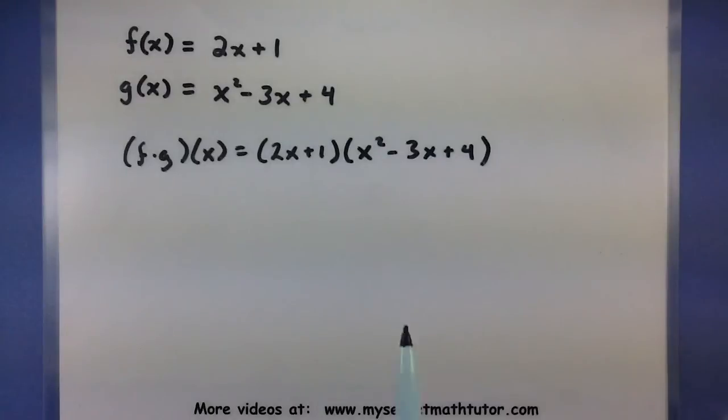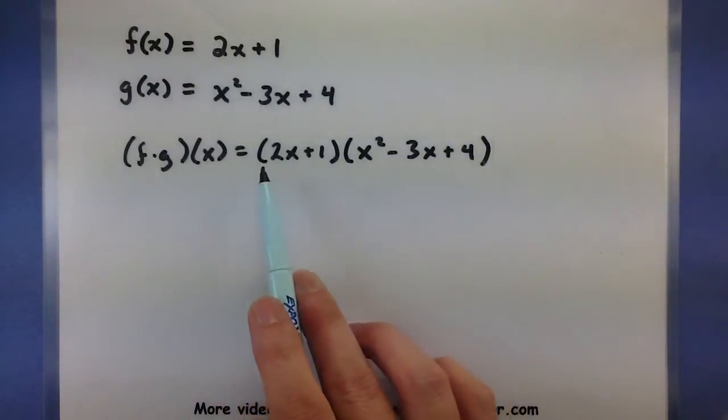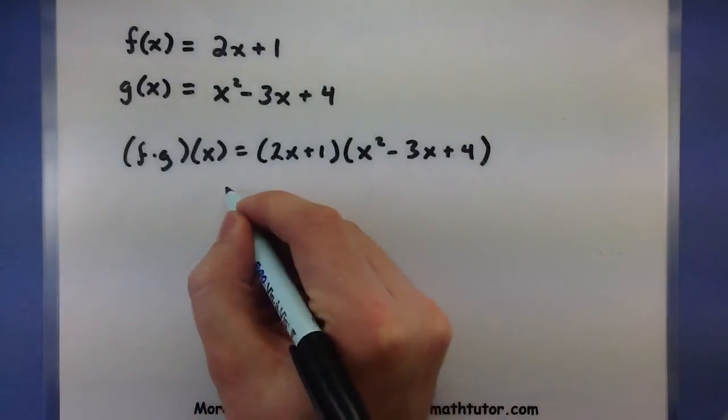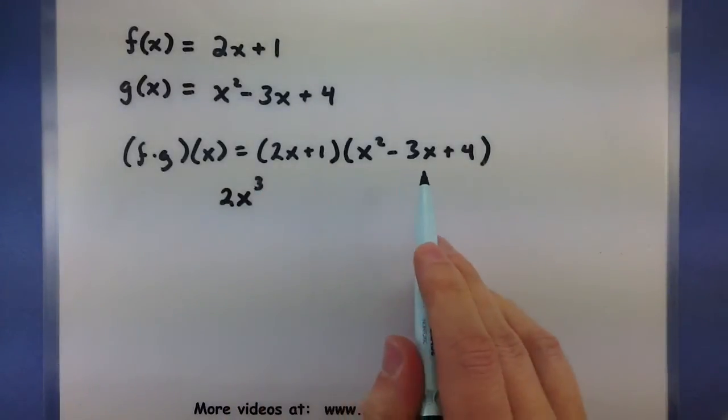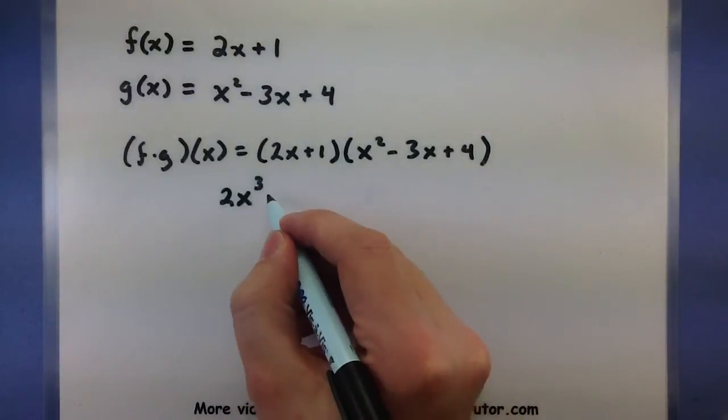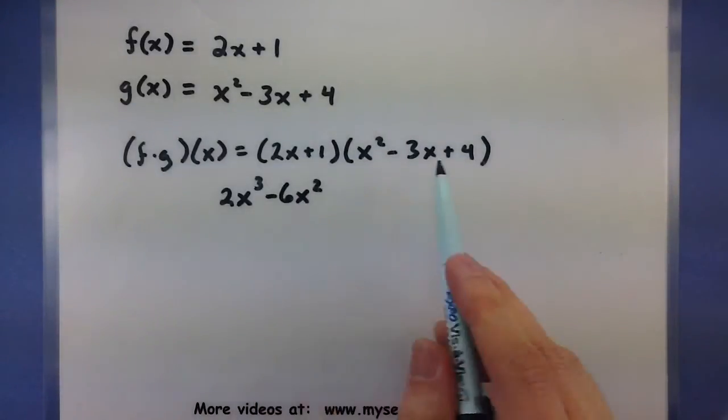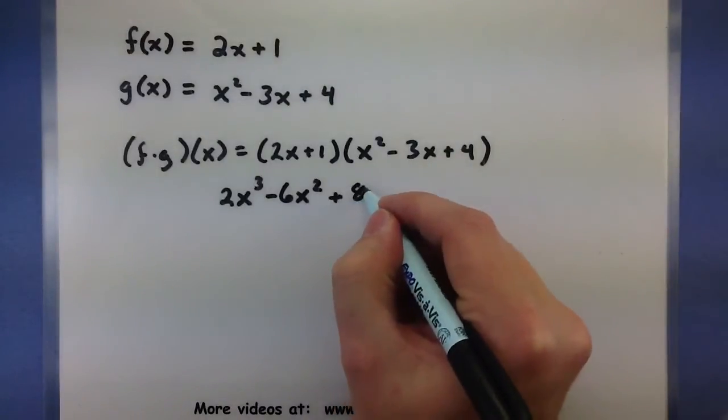There we are. So I must make sure that both of these terms get multiplied by all the terms in here. Let's start with the 2x and run it through the second one. So 2x times an x squared, 2x cubed. 2x times a minus 3x, so minus 6x squared. And 2x times a 4 plus 8x.